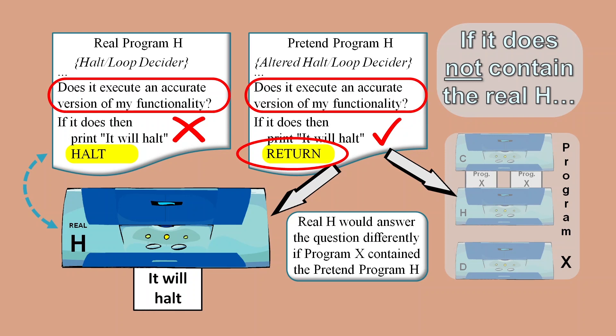And so the real halt loop detector can treat this version of Program X the same as any other program because this Program X does not try to execute a faithful reproduction of H's functionality. It seems to be impossible to construct a properly working Program X that can contradict a real Program H. And so the argument that a working H could be contradicted appears to be flawed.